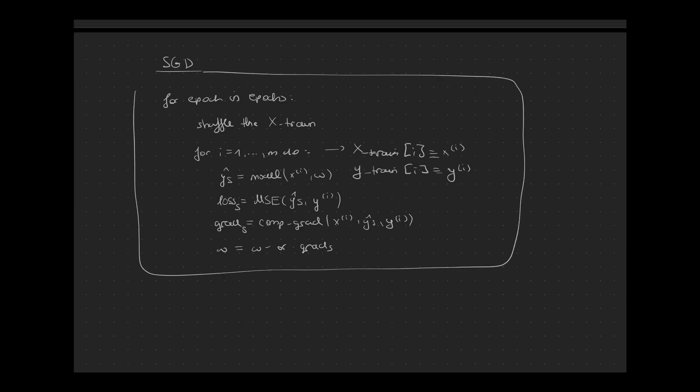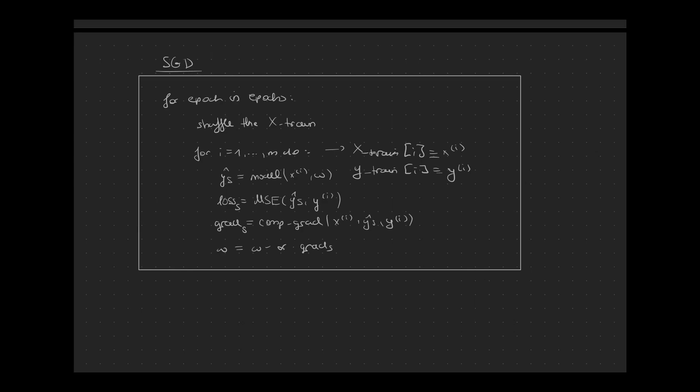That's already Stochastic Gradient Descent — a very basic and simple algorithm. It has the word Stochastic in it since we are stochastically approximating the true gradient that we would have obtained in the standard Gradient Descent case. Also in Gradient Descent we have updated our weights only once during each epoch. In Stochastic Gradient Descent we update our weights multiple times — m times during each epoch, where m is the number of instances. That is why we say that Stochastic Gradient Descent is iterating faster.